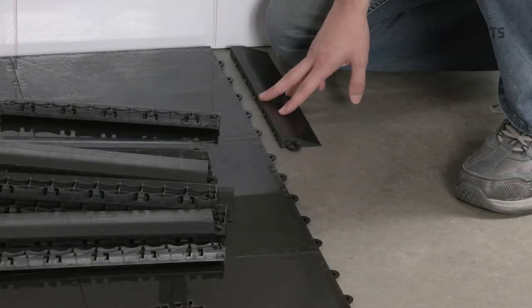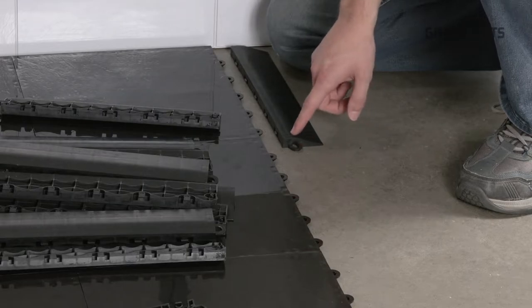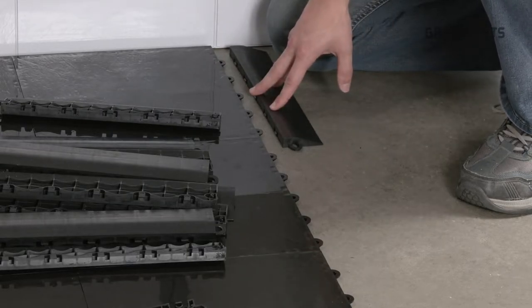If you're installing border strips, make sure you're aware of the tabs and the loops on the tiles, and make sure the loop on the border strip is facing the direction you want to install the border strips.